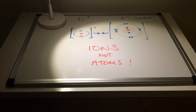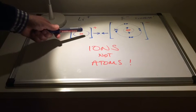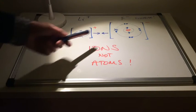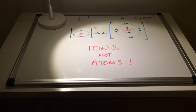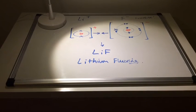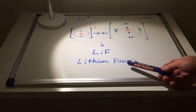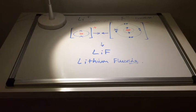And because these ions have got opposite charges, positive and negative, they're actually going to attract each other, just like the opposite poles of a magnet. And they'll become the compound now, more than one type of atom, lithium fluoride.